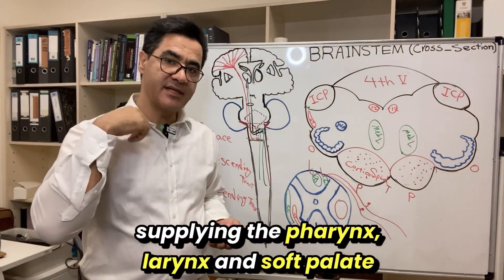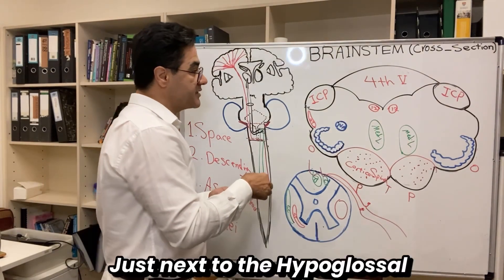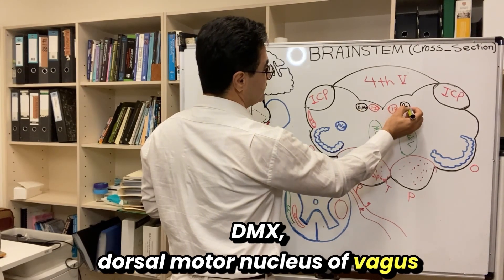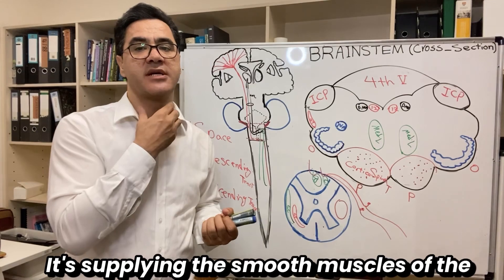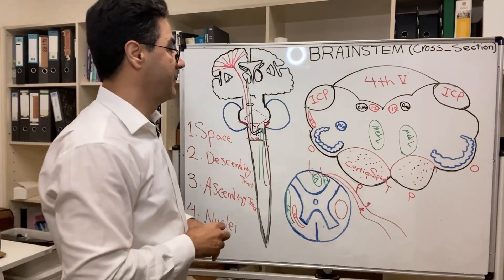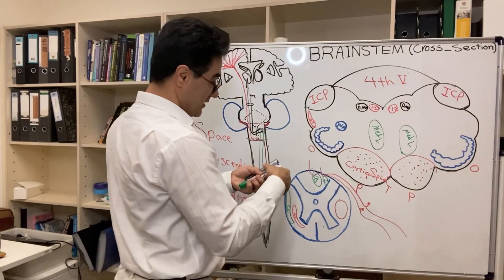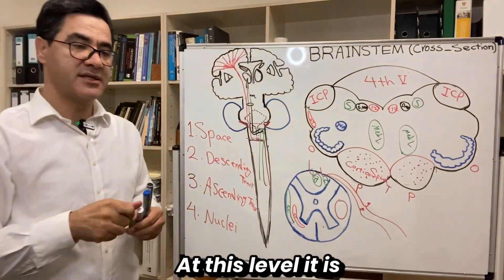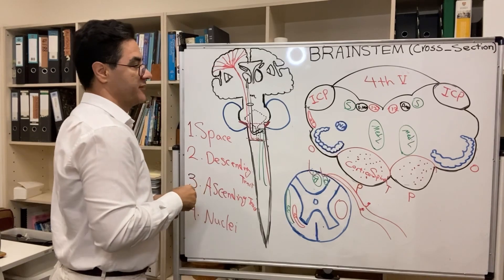Nucleus ambiguus supplies the pharynx, larynx, and soft palate for swallowing and speaking. We also have a parasympathetic nucleus: just next to the hypoglossal we have the DMX — dorsal motor nucleus of vagus, cranial nerve 10. It is the parasympathetic nucleus of the vagus nerve, supplying the smooth muscles of the lung, cardiac muscle, and smooth muscles of the gut. For sensory nuclei: just lateral to the DMX we have the solitary nucleus, which at this level is related to taste — cranial nerves 7, 9, and 10.